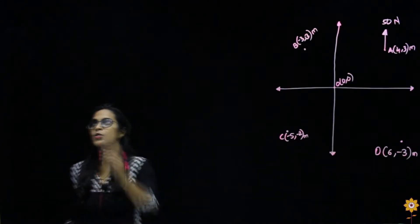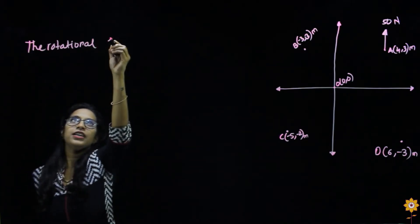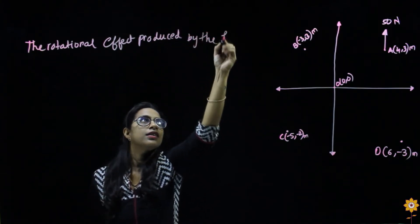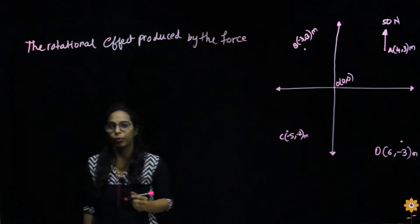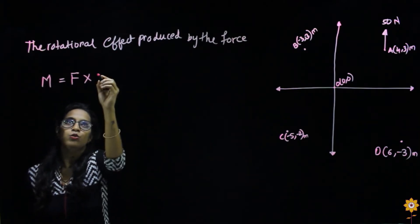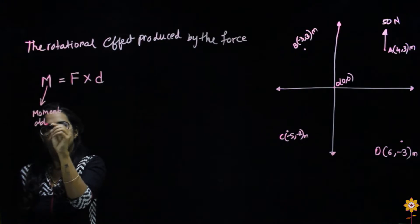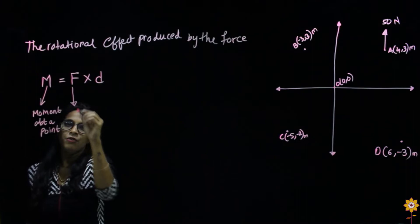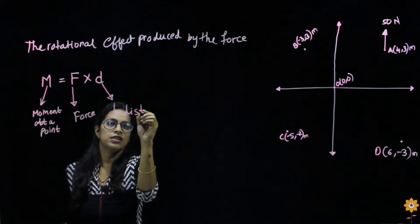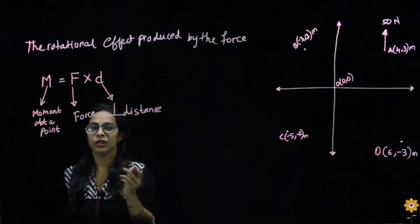So as we were talking about moment — moment is actually the rotational effect produced by a force. If I want to express it mathematically, moment M equals F into D, where M is the moment about a point, F is the force, and D is the perpendicular distance. Let us see an example here, but before that we should know the sign convention for the moment.